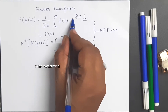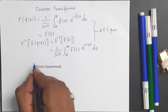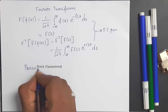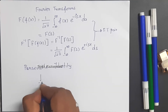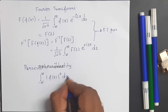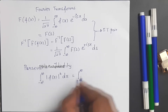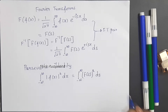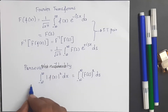Instead of e^(+isx) we can use e^(−isx) — both formulas are correct. Corresponding to the Fourier transform, we introduce Parseval's identity: the integral from minus infinity to plus infinity of |f(x)|² dx equals the integral from minus infinity to plus infinity of |F(s)|² ds. Now we are going to see problems relevant to the Fourier transform, inverse transform, and Parseval's identity.